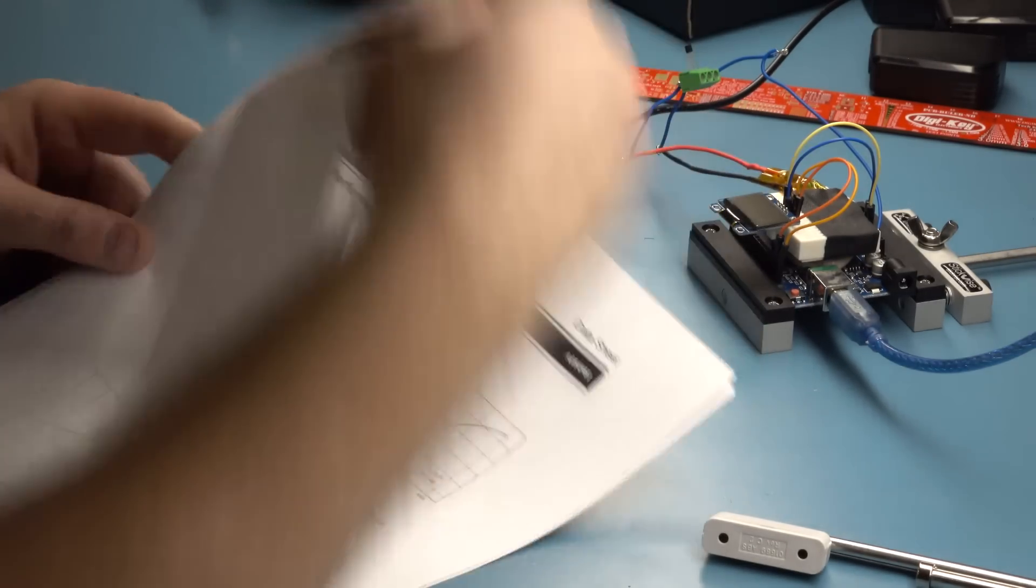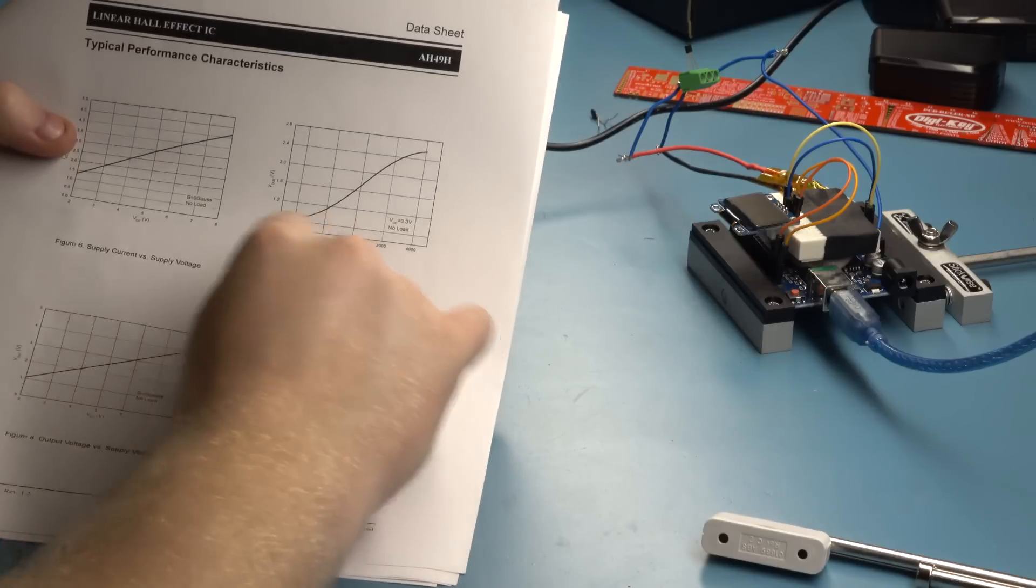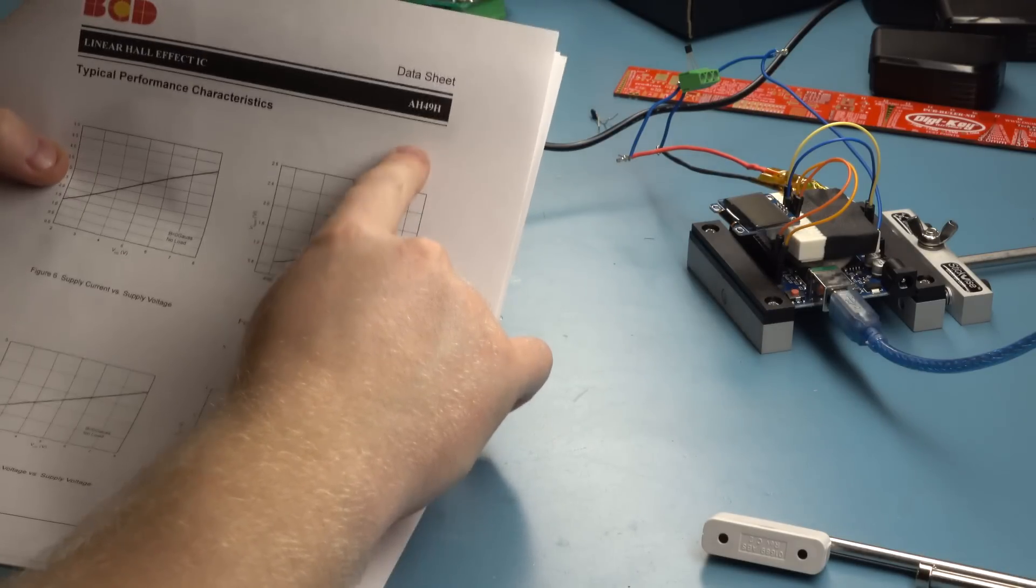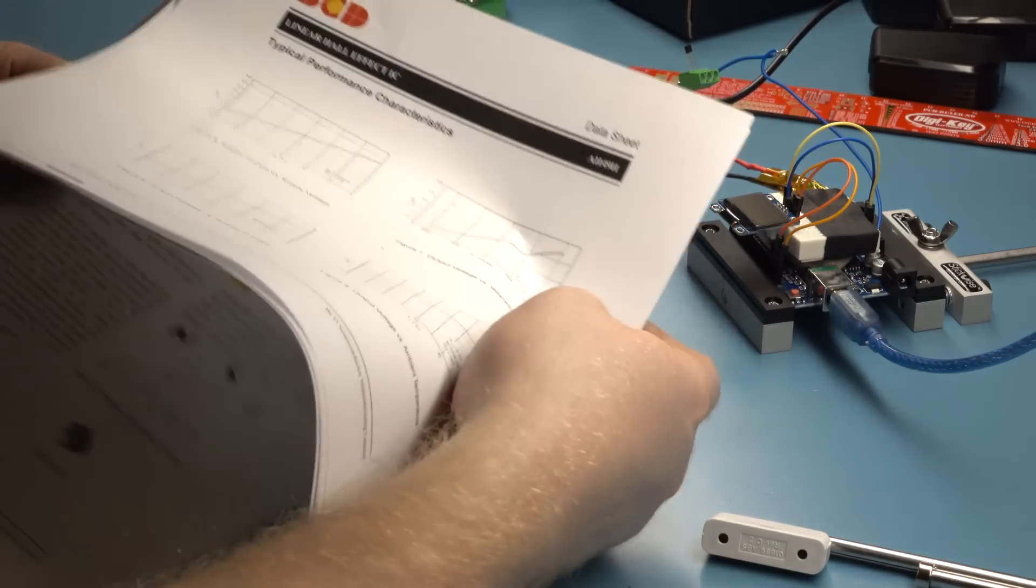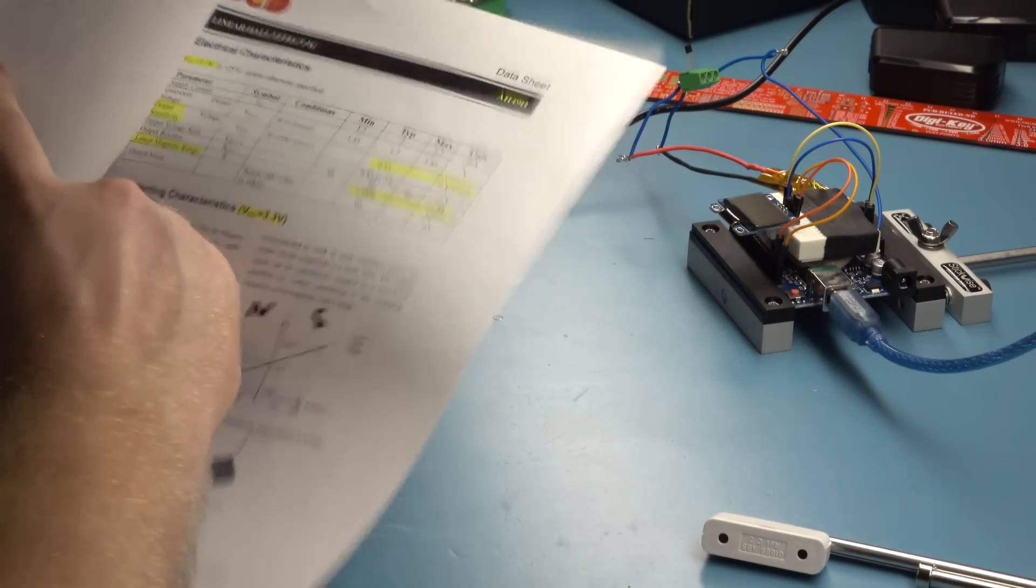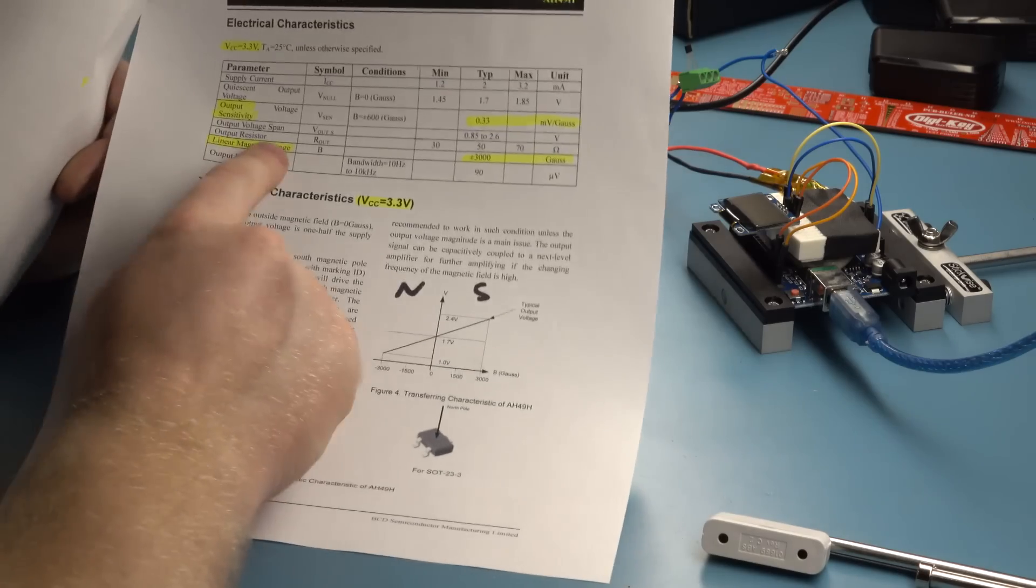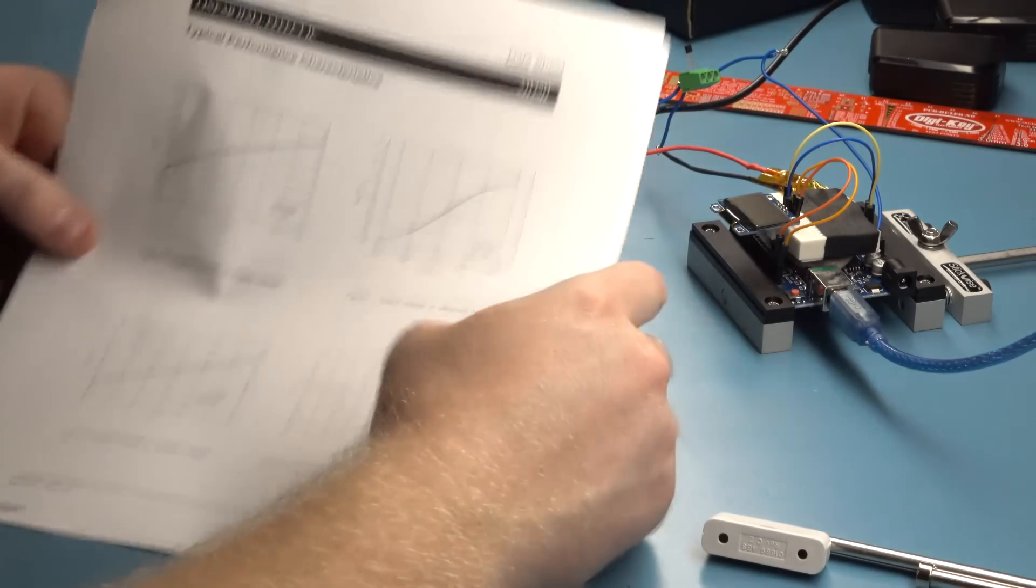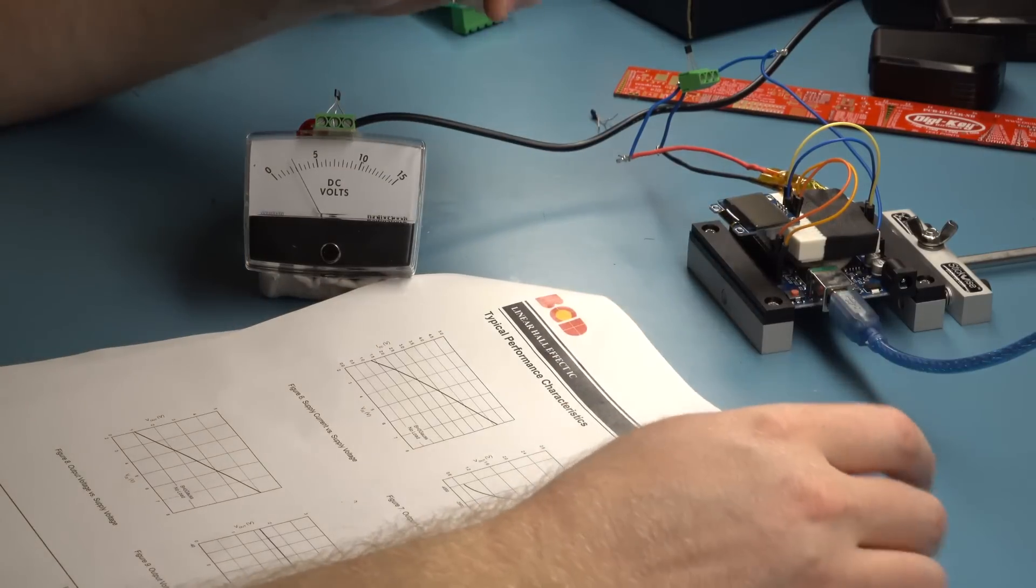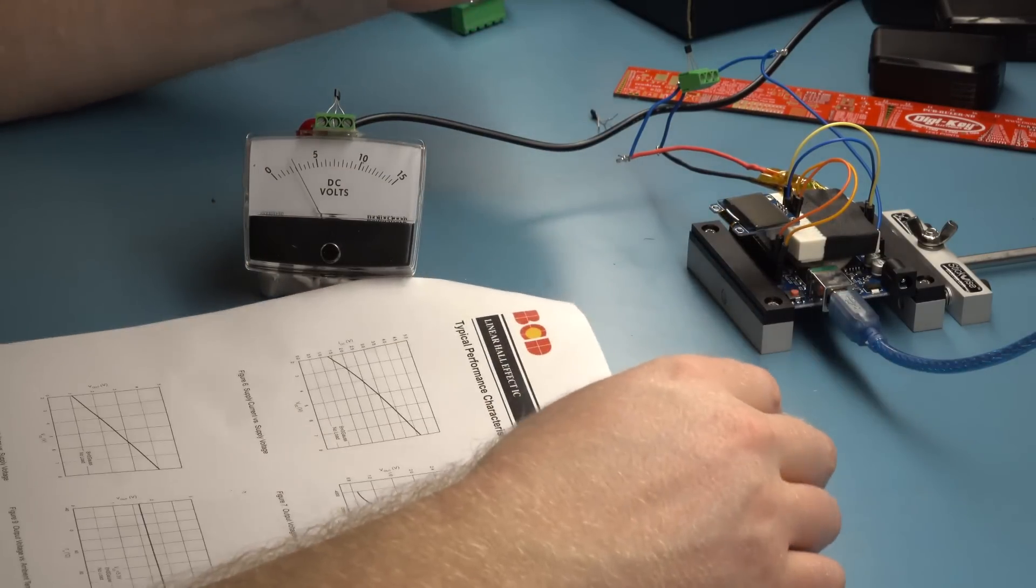So you'll see on the data sheet we have it actually reading up to 4,000 Gauss even though it's rated for plus or minus 3,000. And that plus or minus 3,000 is just the linear magnetic range. So it will still read beyond that. It just won't be linear anymore. So we could still use it for comparison purposes.